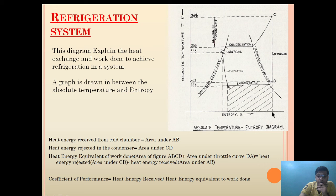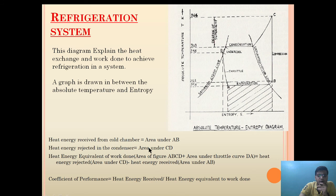The heat extracted from the environment is the area under AB on the diagram. The heat rejected in the condenser is equal to the area under CD. The heat energy equivalent of work done is the area of the figure ABCD plus the area under DA.